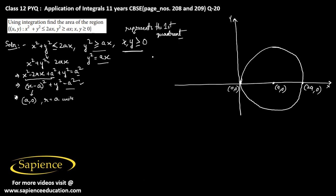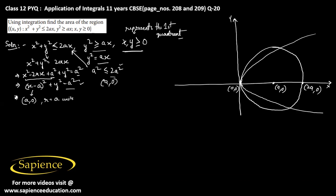The graph of the parabola will be drawn similarly. For the inequality x squared plus y squared less than 2ax, if we test the point (a, 0): a squared is obviously less than 2a squared, so (a, 0) satisfies this inequality. This means the inequality represents the region inside the circle.